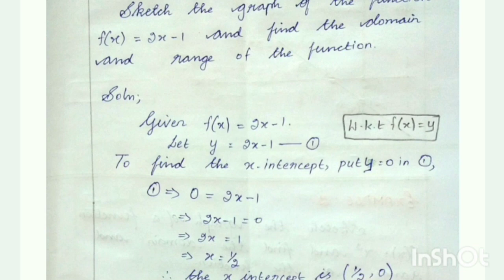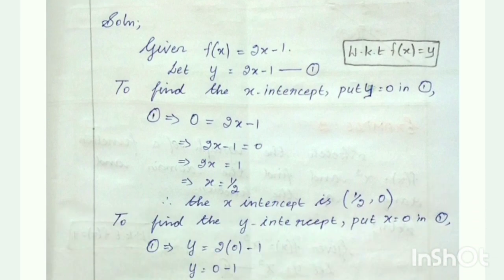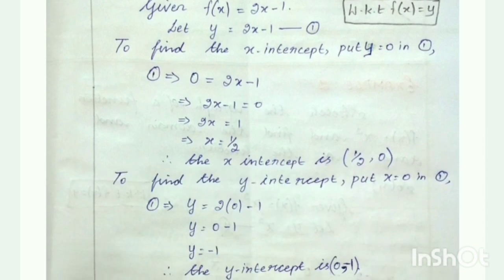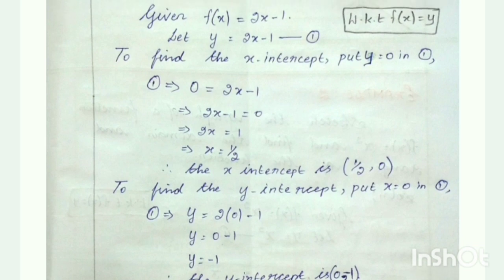We take that second-line equation as equation number 1. Now what we have to do is find 2 points, because to plot a graph we need at least 2 points. So we have to find the x-intercept and y-intercept. To find the x-intercept, we substitute the value of y as 0. Similarly, to find the y-intercept, we substitute x value as 0 and we will get the value of y-intercept.